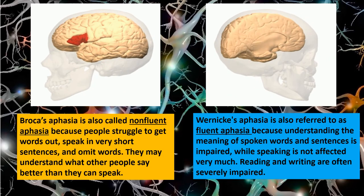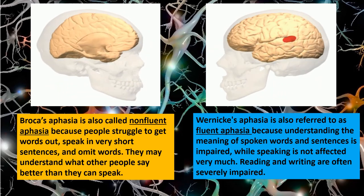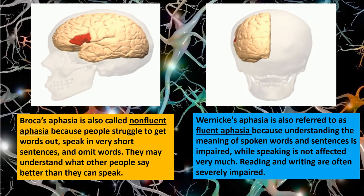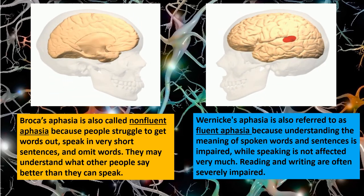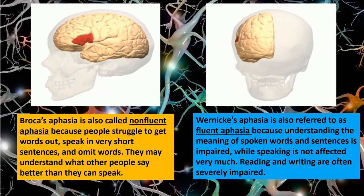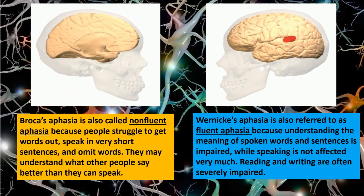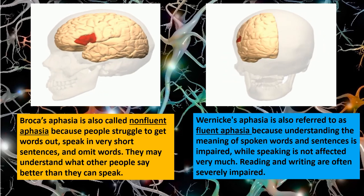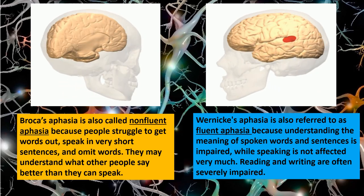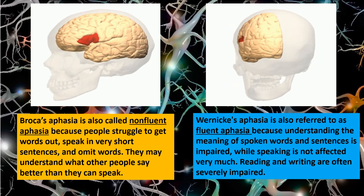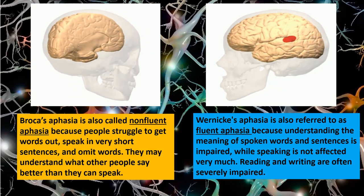A bit more terminology about aphasia: Broca's aphasia is often called non-fluent aphasia because people struggle to get words out, speak in very short sentences, and leave out words. With Broca's aphasia, a person may understand what others are saying but have trouble speaking. Wernicke's aphasia is called fluent aphasia — people retain a good ability to speak, but they have trouble understanding the meaning of spoken words and sentences, and reading and writing are often severely impaired.